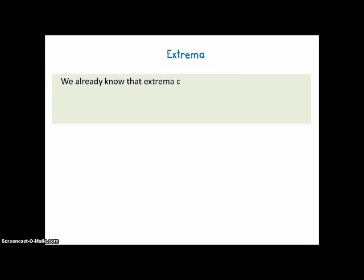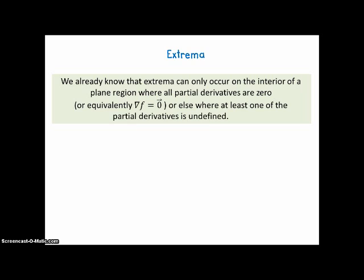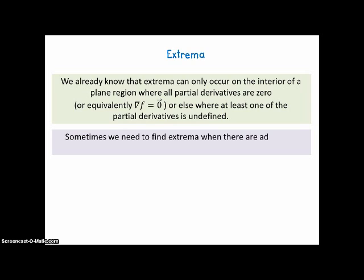Now we're going to talk about extrema. We already know that extrema can only occur on the interior of a plane region where all partial derivatives are zero, or equivalently the gradient vector is a null vector, or where at least one of the partial derivatives is undefined. But sometimes we need to find extrema when there are additional constraints, and in this situation Lagrange multipliers can help.